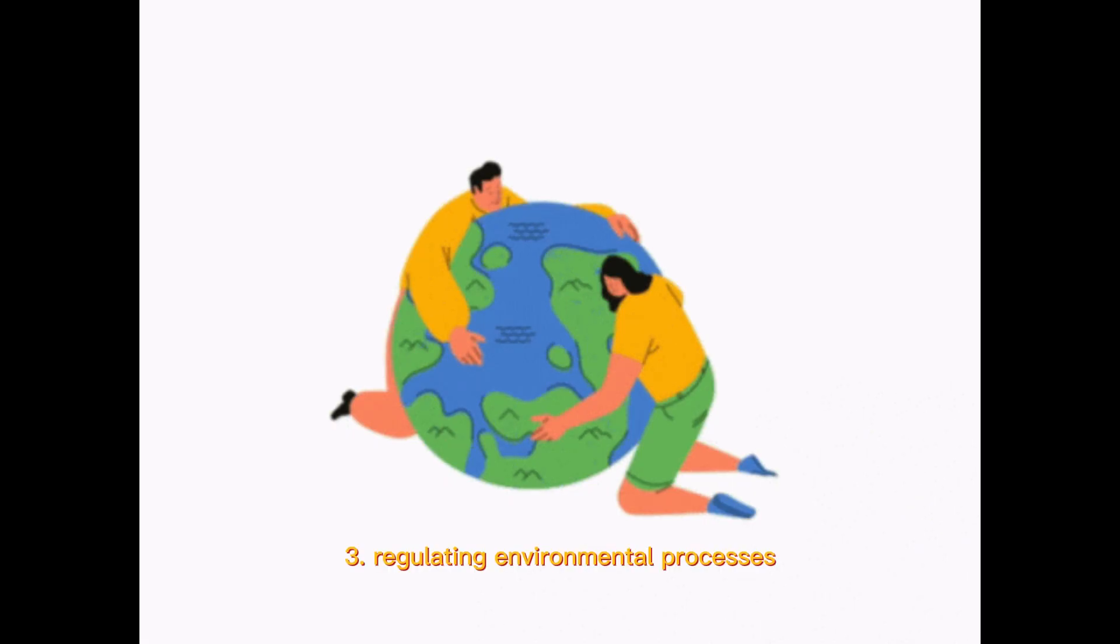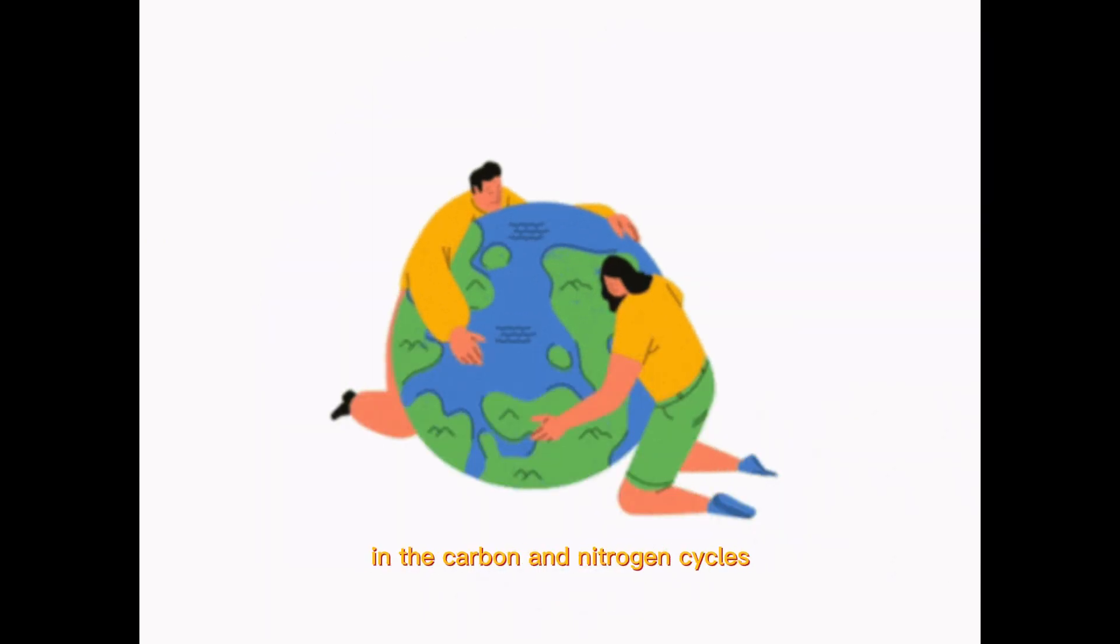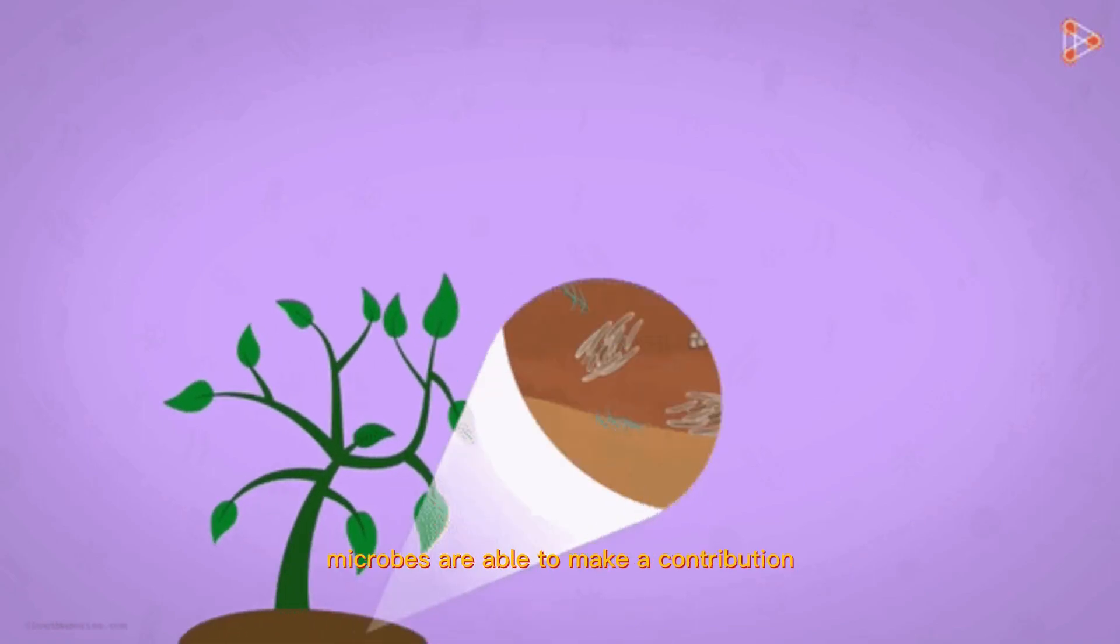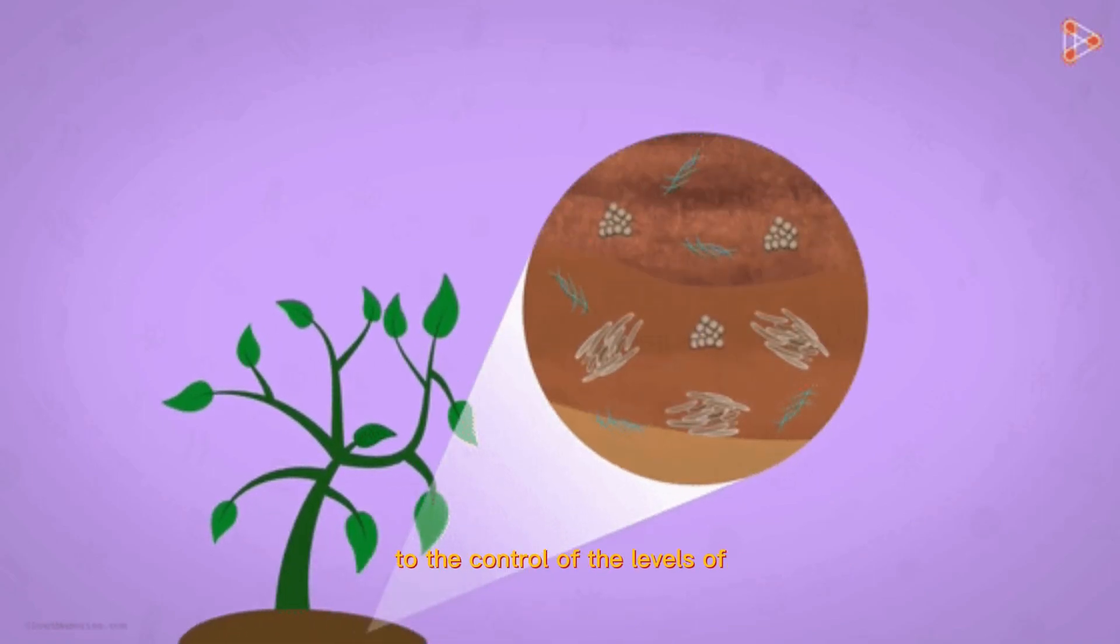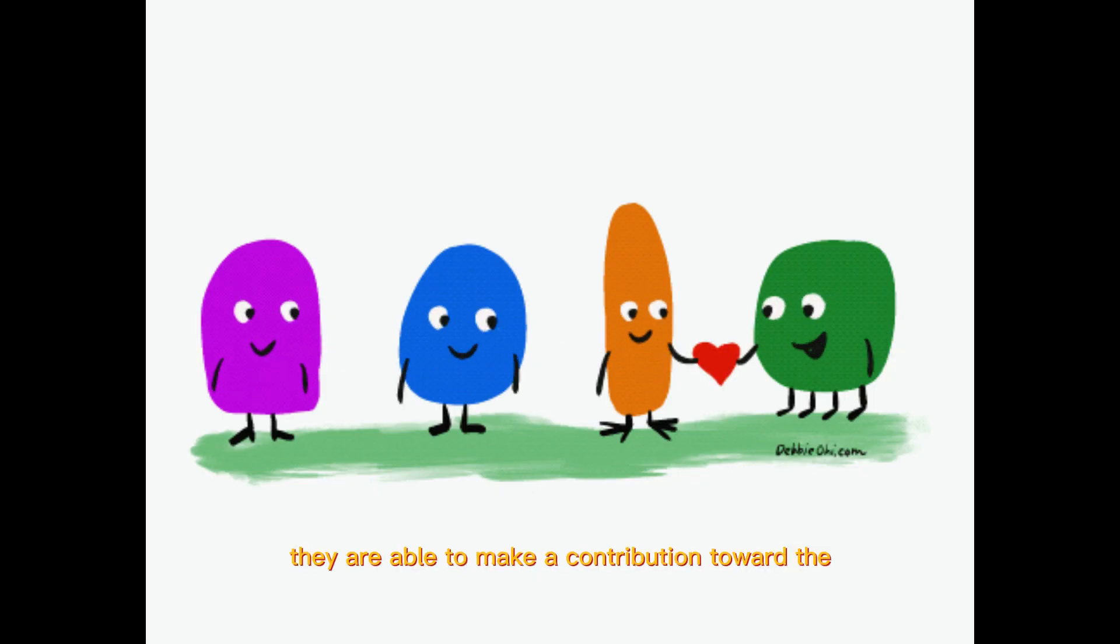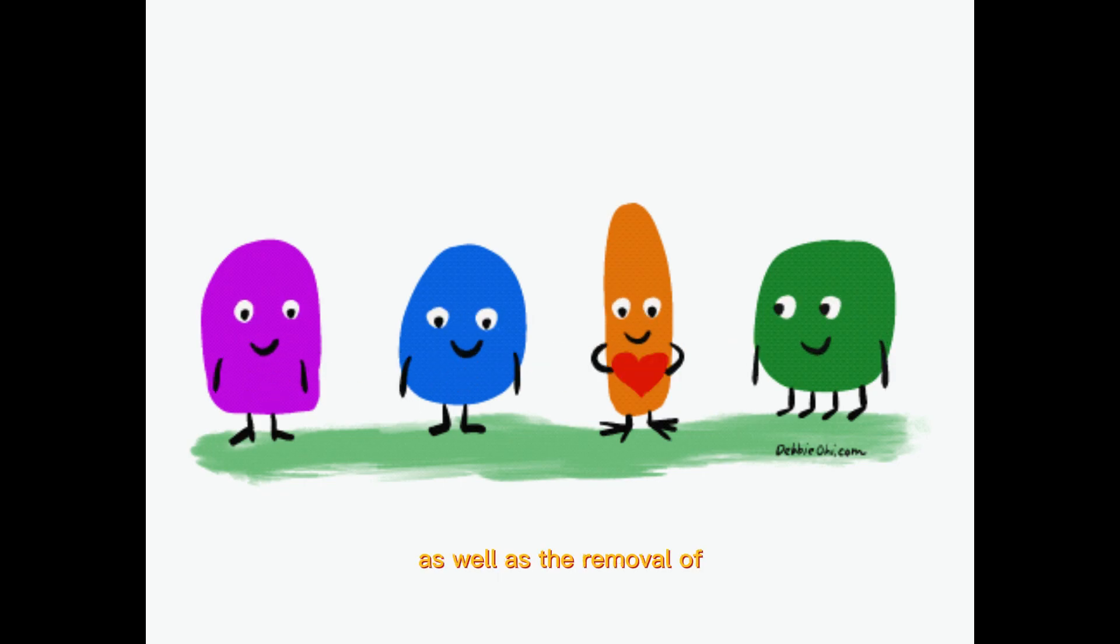3. Regulating environmental processes. As a result of the role that they play in the carbon and nitrogen cycles, microbes are able to make a contribution to the control of the levels of greenhouse gases that are found in the atmosphere. In addition to this, they are able to make a contribution toward the cleaning of water as well as the removal of pollutants from the environment.